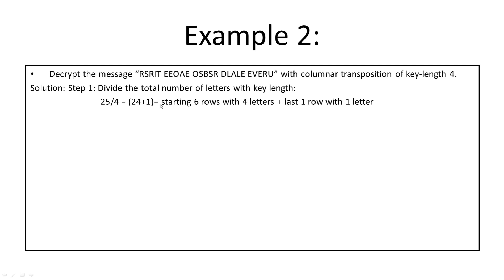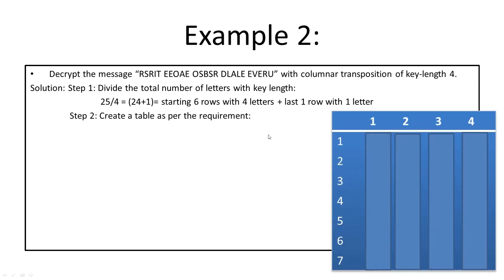So there are seven rows total: six rows with four letters and one row with one letter. There are four columns. We create a table with four columns and seven rows.